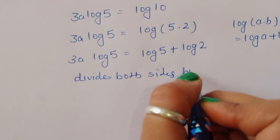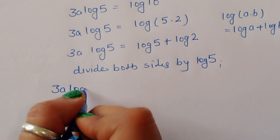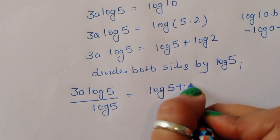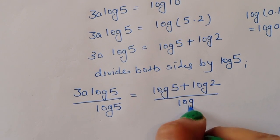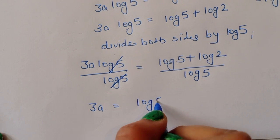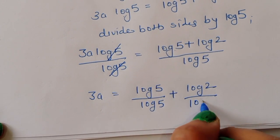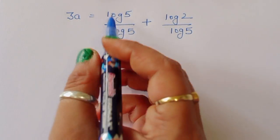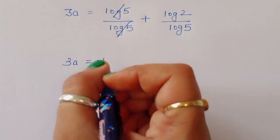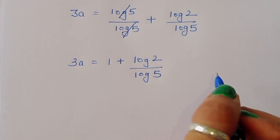Now log(5) appears on both sides, so we divide both sides by log(5). We get 3a equals log(5)/log(5) plus log(2)/log(5). Separating both terms, since log(5)/log(5) cancels to 1, we get 3a equals 1 plus log(2)/log(5).